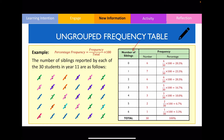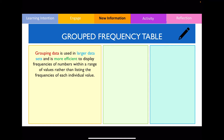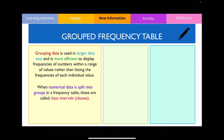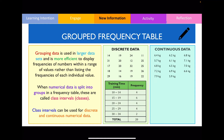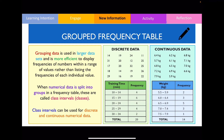Let's now talk about grouped frequency tables. We need to group data when dealing with much larger data sets, as it is much more efficient to display a range of values rather than listing every individual value, which would make our columns ridiculously long. When we chunk data into smaller groups, we refer to these ranges as class intervals, also known as classes. We can group data sets for both discrete and continuous data, and I've provided examples of grouped frequency tables for both.